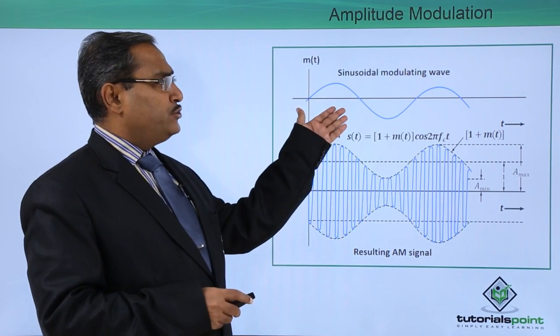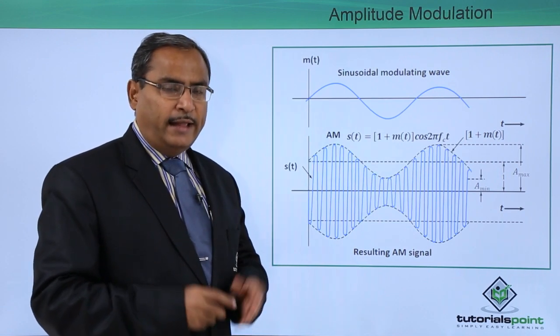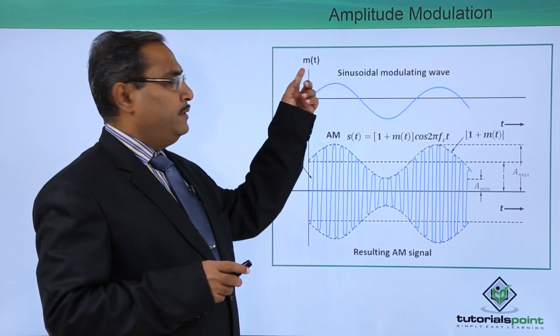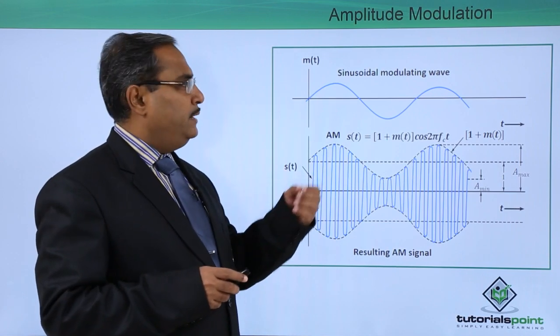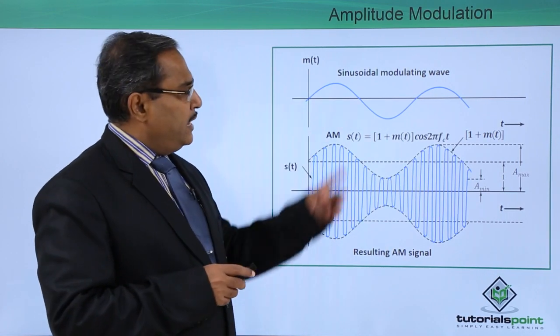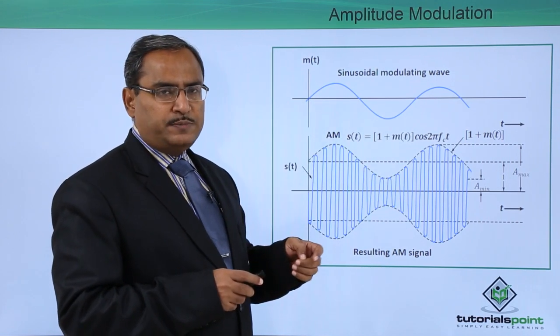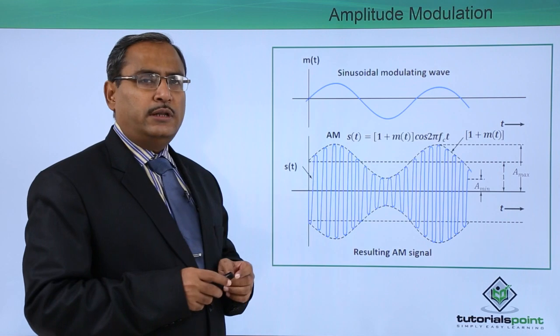This is our sinusoidal modulating wave and this is our analog data. This particular signal has been represented by the function m(t), because it is a modulating wave. Along the x-axis we have plotted the respective time, along the y-axis we have plotted the amplitude.